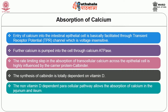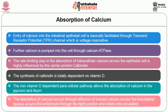The non-vitamin D-dependent paracellular pathway allows the absorption of calcium in the jejunum and the ileum. The absorption of calcium occurs through diffusion of ionized calcium across the basolateral spaces around the enterocyte through tight junctions, and then it enters into the circulation.